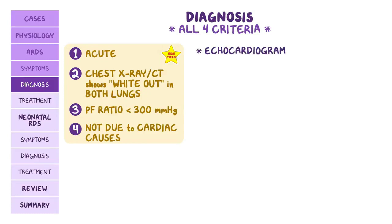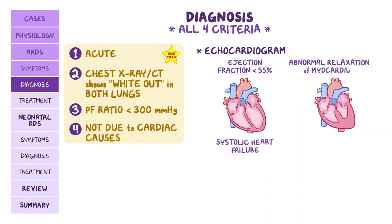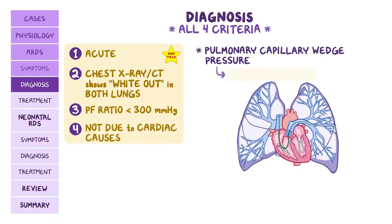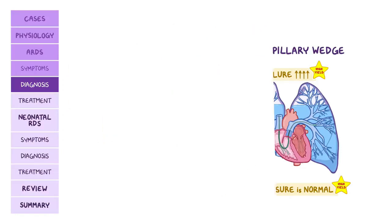Fourth, the respiratory distress must not be due to cardiac causes like heart failure, often assessed by echocardiogram looking for an ejection fraction below 55% in systolic heart failure or abnormal myocardial relaxation in diastolic heart failure. The pulmonary capillary wedge pressure, measured by catheter in a pulmonary arterial branch, is elevated in heart failure but normal in ARDS, since ARDS edema is caused by leaky capillaries rather than increased pressure.